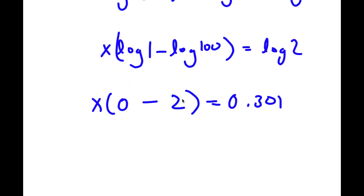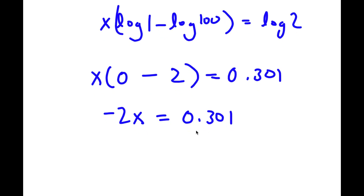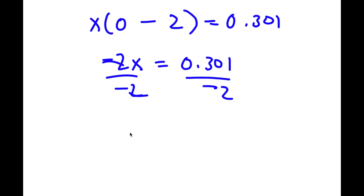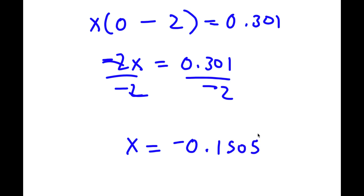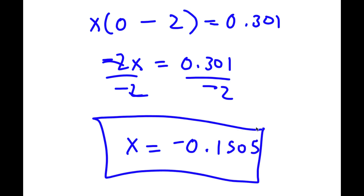Now 0 minus 2 is negative 2, so I have negative 2 times x is equal to 0.301. I'm going to divide both sides by negative 2. These two cancel out and I'm left with x is equal to 0.301 over negative 2, which is equal to negative 0.1505. So this is my answer.